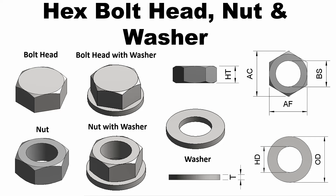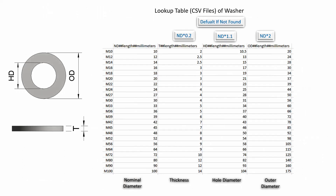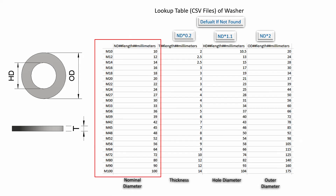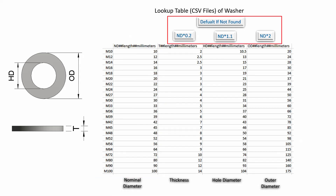I will refer those dimensions in the picture to create the parameters. This is the lookup table CSV file of washer. Its data are referred from the manufacturer specifications. I will use this lookup table CSV file to create the parametric family. There are M10 to M100. I will use this formula for default if not found.